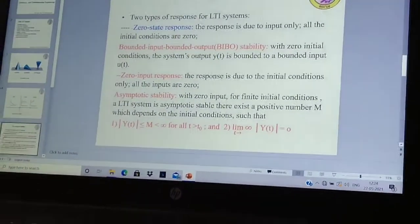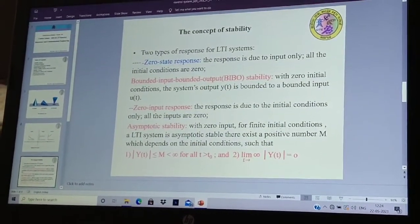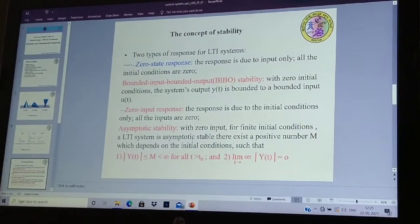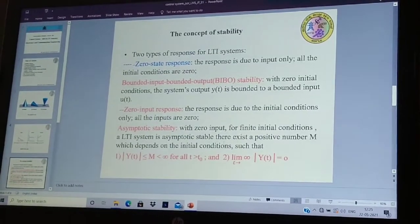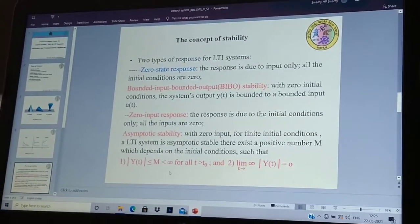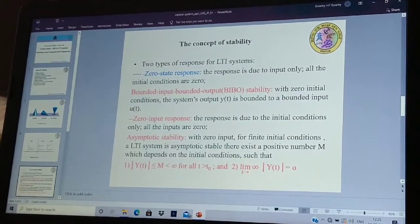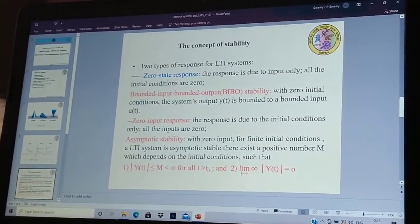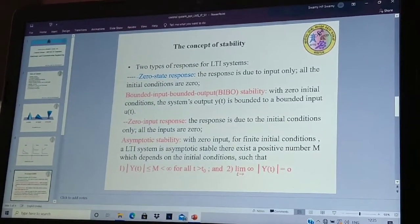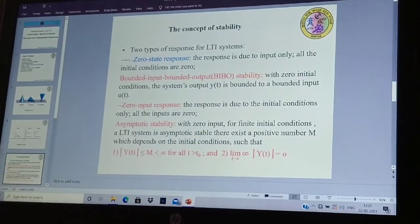Asymptotic stability. In asymptotic stability, zero input will be there. For infinite initial conditions, since a linear time invariant system is asymptotic stable, there exists a positive M, which depends on the initial conditions, such that this is the asymptotic stability. Magnitude of Y of T, that is the magnitude of output response, will be in between M, that is the asymptotic stable exists with a positive number in between.